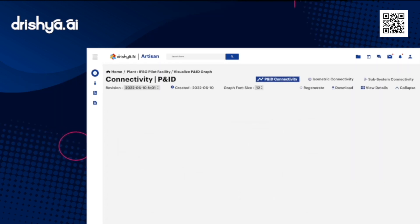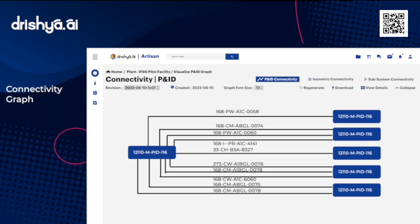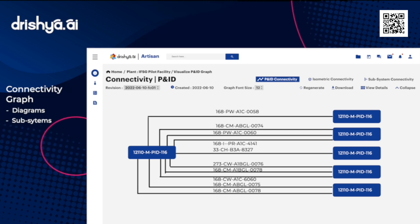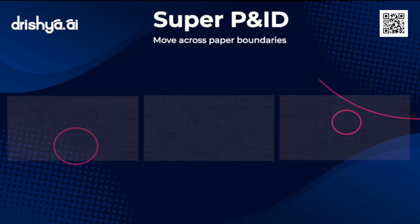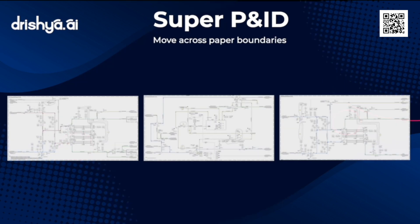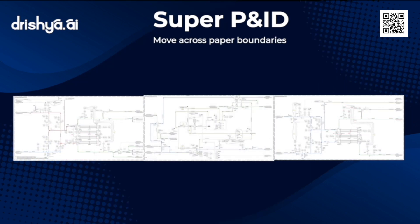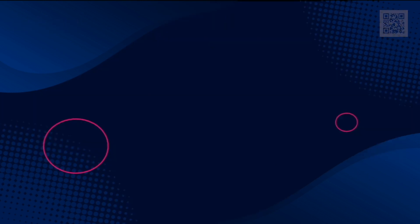Artisan also understands connectivity between the diagrams and subsystems across large datasets, to move across boundaries and generate a super P&ID capable of serving as a master diagram for the entire facility.